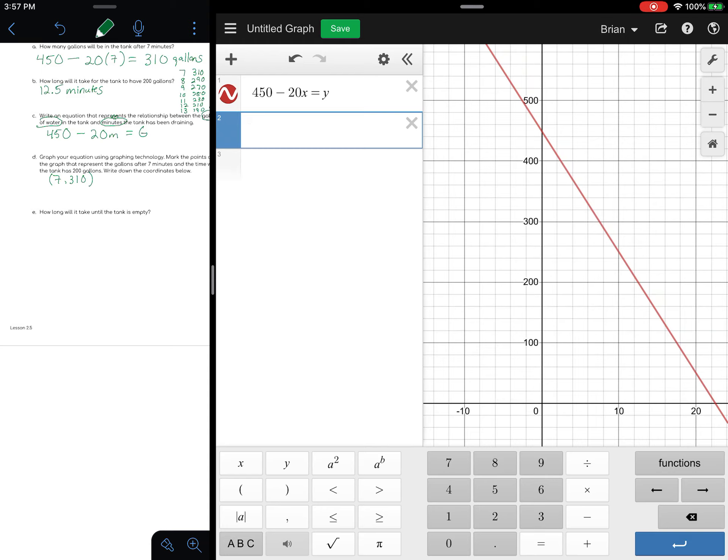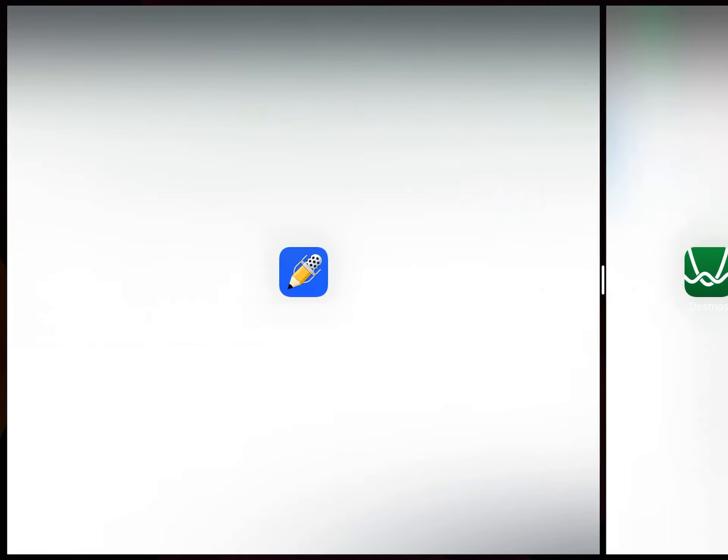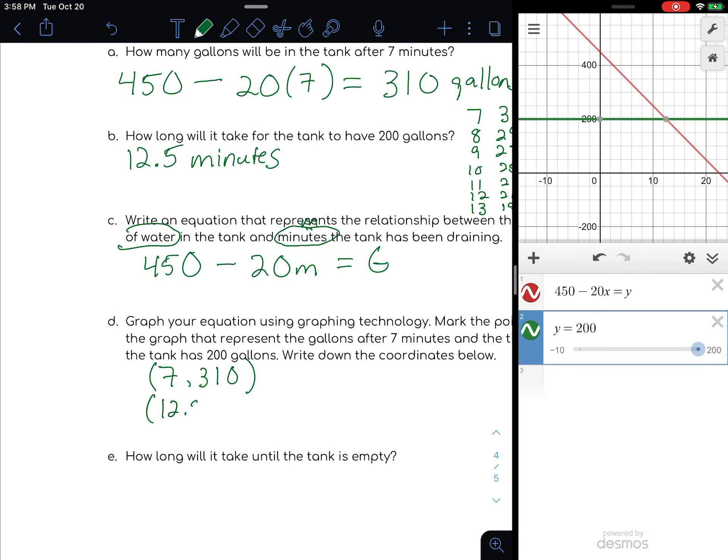Notice what we just did is we solved this equation for when we had 7 minutes—what the gallons were. The reverse of that is if we have 200 gallons, how many minutes did that take. Let me delete that. 200 gallons is our Y axis value, so if I do Y equals 200, notice I've got a line going straight across at 200. I'm looking for that intersection right there, and I've confirmed 12.5 is my amount of minutes.